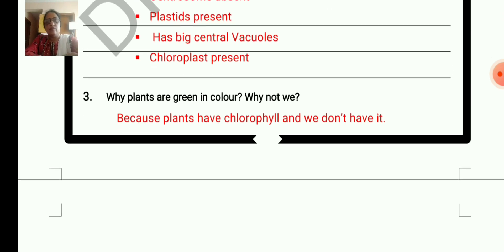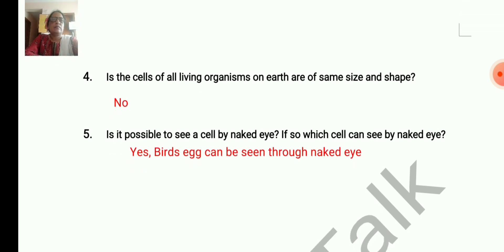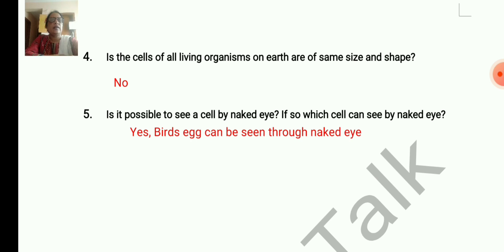Why plants are green in color, why not we? Because plants have chlorophyll and we don't have. Is the cells of all living organisms on earth of the same size and shape? So all organisms have different size and shape. So no, or you can write complete sentence: cells of all living organisms on earth have different size and shape. Is it possible to see a cell by naked eye? If so, which cell can be seen by naked eye? Yes, bird's egg can be seen through naked eye.